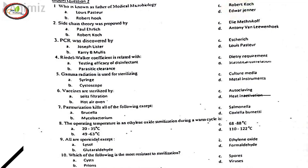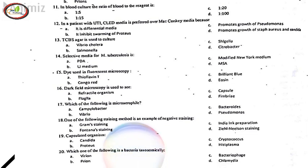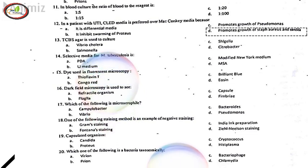9. All are sporicidal except, A. Lysol. 10. Which of the following is the most resistant to sterilization? B. Prions. 11. In blood culture the ratio of blood to the reagent is, A. 1 to 5. 12. In a patient with UTI, CLED media is preferred over MacConkey media because, D. It promotes growth of Staph aureus and Candida.